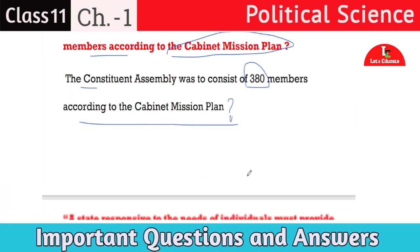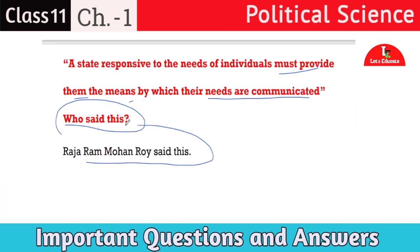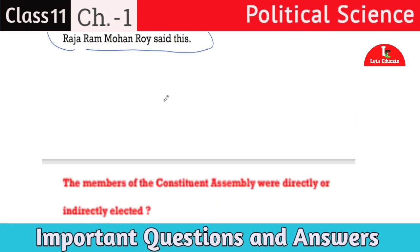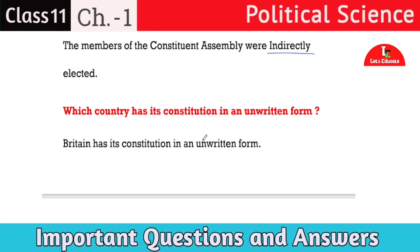Next question: 'A state responsive to the needs of individuals must provide them the means by which their needs are communicated' — who said this line? Raja Ram Roy said this line. Next question: were the members of the constituent assembly directly or indirectly elected? The members of the constituent assembly were indirectly elected. Next question: which country has its constitution in an unwritten form? Britain has its constitution in an unwritten form.